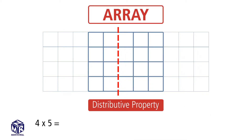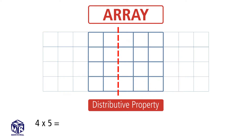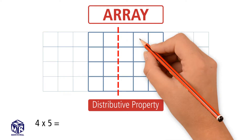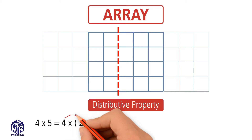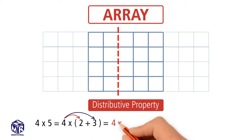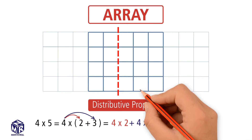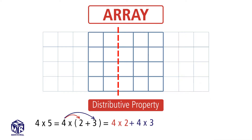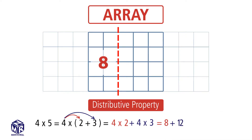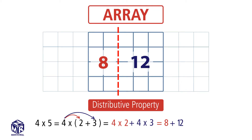We break apart 5 into 2 plus 3. We multiply each addend by 4. We add the products and we get 20.